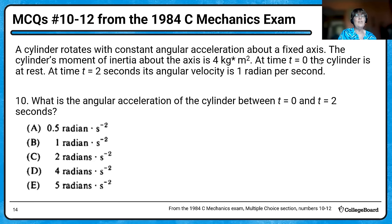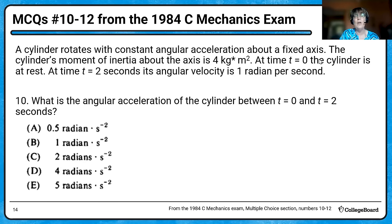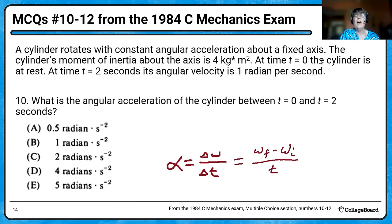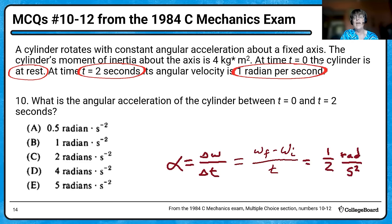Now we've got a cylinder rotating with constant angular acceleration about a fixed axis. Given the cylinder's moment of inertia, at time zero the cylinder is at rest, and after two seconds it reaches an angular velocity of one radian per second. They want us to find the angular acceleration. Angular acceleration is the change in angular velocity: starting at rest and reaching one radian per second after two seconds, the angular acceleration is one-half radian per second squared, which is choice A.